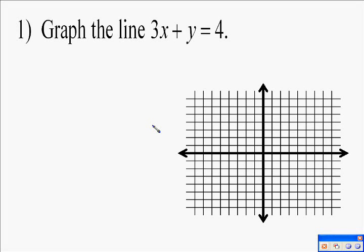The following video asks us to graph the line 3x plus y equals 4. To do this, we're going to use a slope intercept form of a line, which is y equals mx plus b.